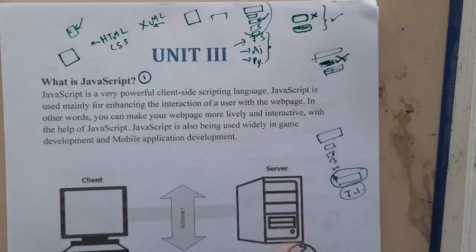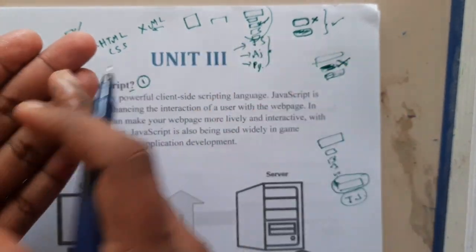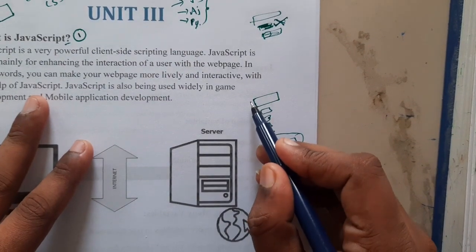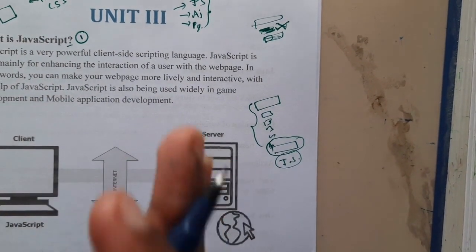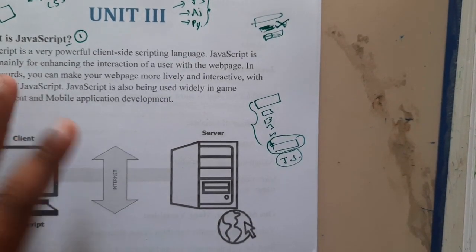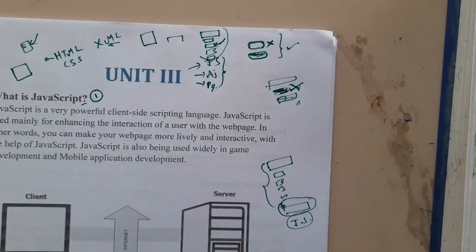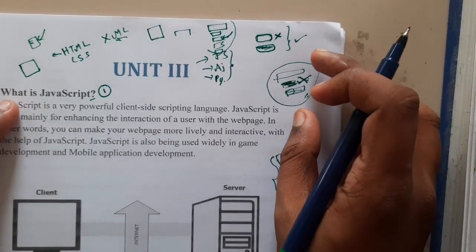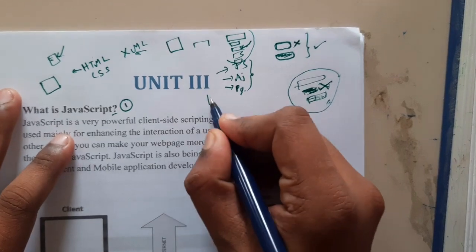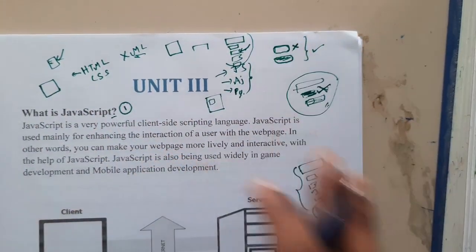Basically, JavaScript is used to maintain the relation between the user and the website — interaction and enhancement. If you answer correctly, balloons come from the bottom and pop up saying 'well done.' Timers, countdowns, and everything live on the website that is interacting and changing — all those things are done using JavaScript.